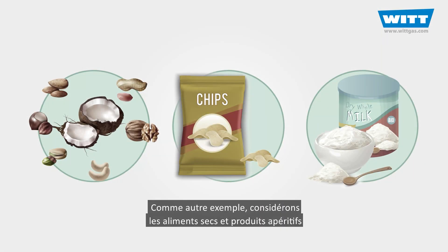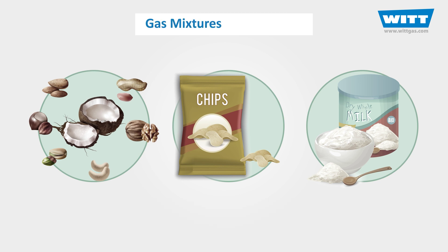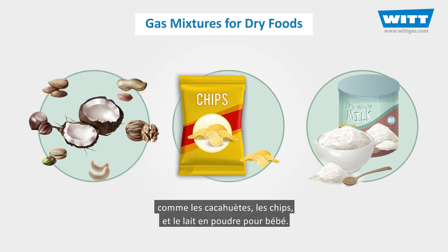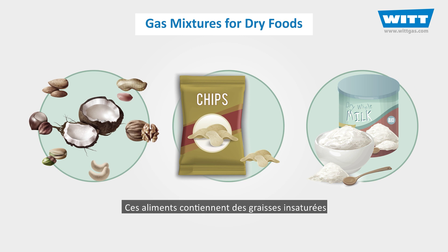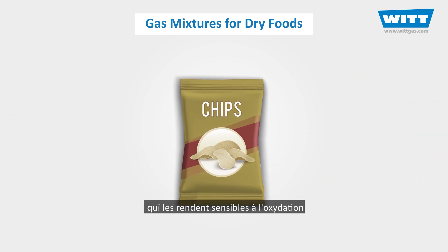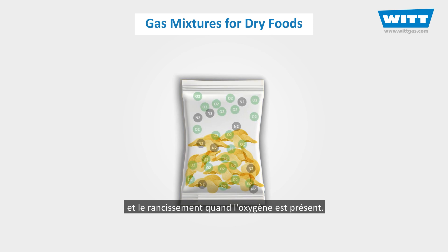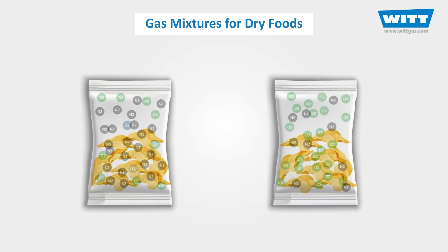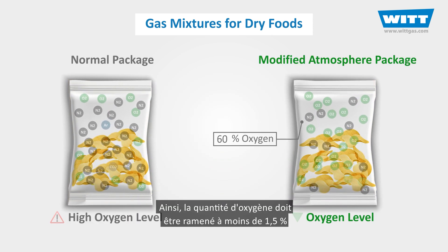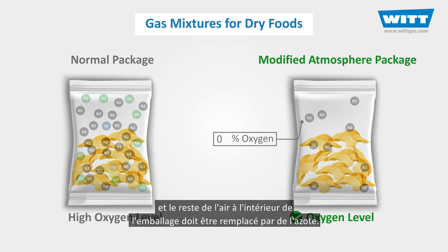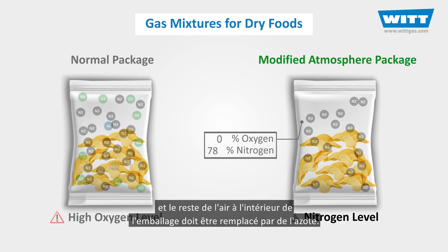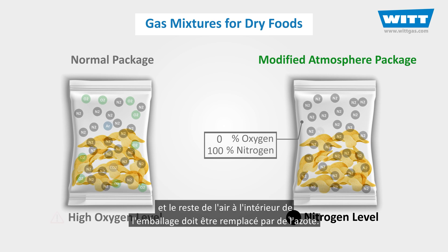As another example, let's consider dry foods and snacks like peanuts, potato chips, and baby milk powder. These foods contain unsaturated fats that make them sensitive to oxidation and rancidity when oxygen is around. So the oxygen amount must be reduced to under 1.5%, and the rest of the air inside of the package must be replaced with nitrogen.